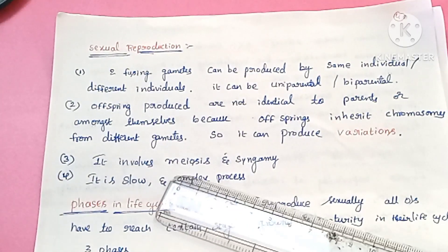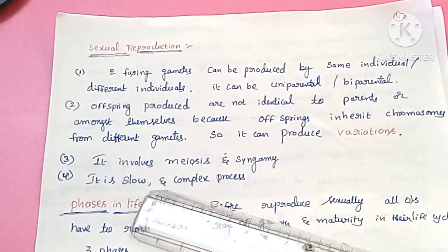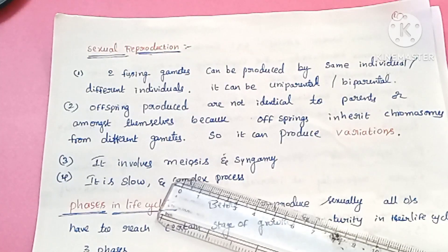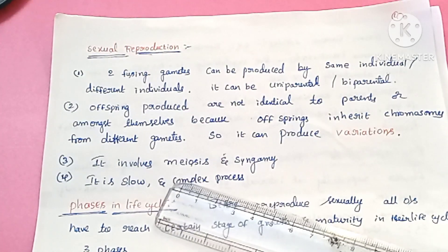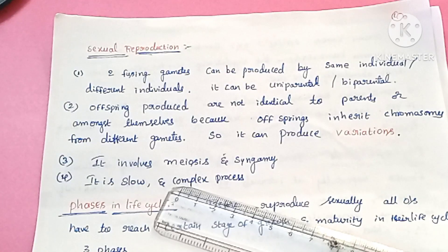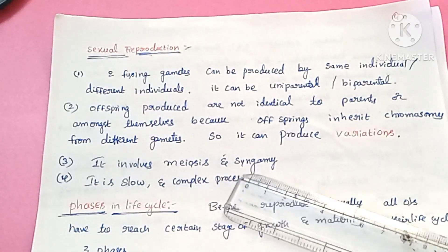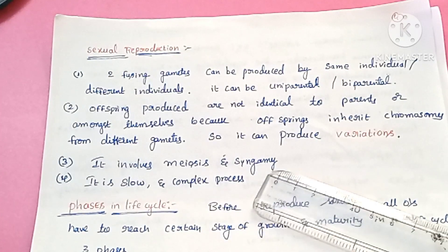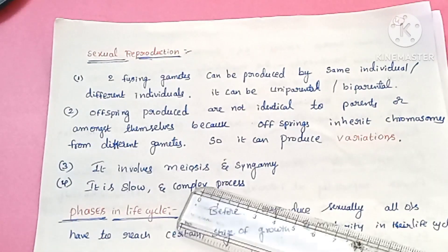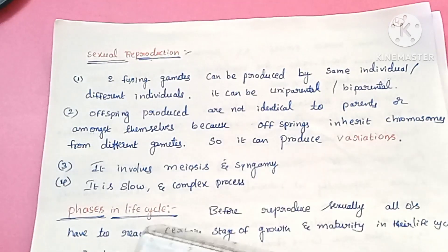In sexual reproduction there are gametes, and these undergo reduction division — that is meiosis — producing haploid gametes. Then fusion of gametes, called syngamy, occurs. So meiosis and syngamy both occur in sexual reproduction.